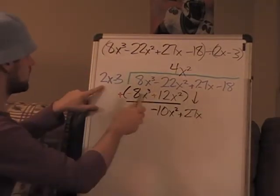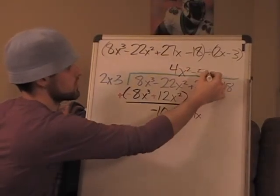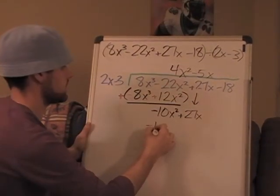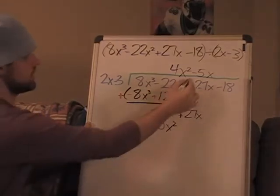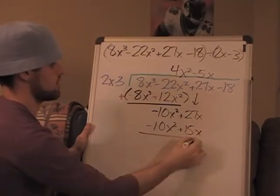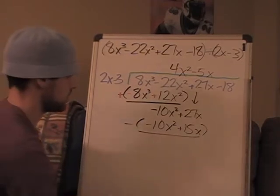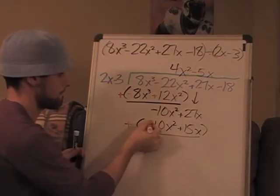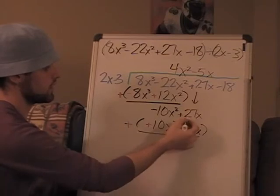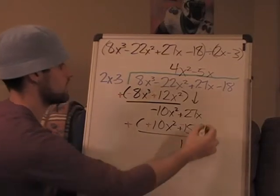Real quickly: negative 5. If you're unsure about what to write, it's just going to be x. Negative 5x - that's negative 10x². Negative 5 times negative 3 is positive 15x. Subtract - these cancel obviously, and 27 take away 15 is 12x.